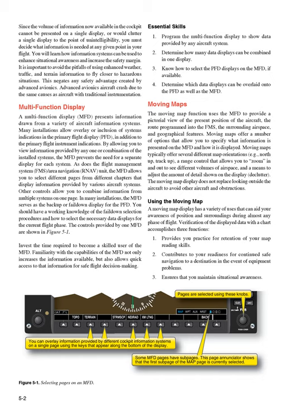Moving Maps. The moving map function uses the MFD to provide a pictorial view of the present position of the aircraft, the route programmed into the FMS, the surrounding airspace, and geographical features. Moving maps offer a number of options that allow you to specify what information is presented on the MFD and how it is displayed. Moving maps typically offer several different map orientations — for example, north-up, track-up — a range control that allows you to zoom in and out to see different volumes of airspace, and a means to adjust the amount of detail shown on the display, called declutter.